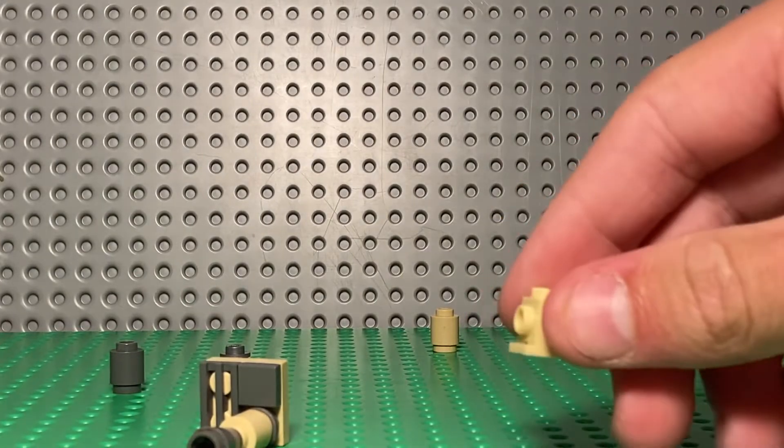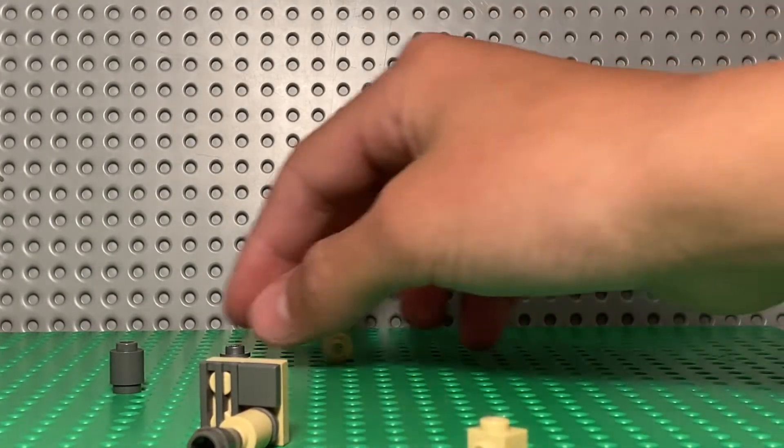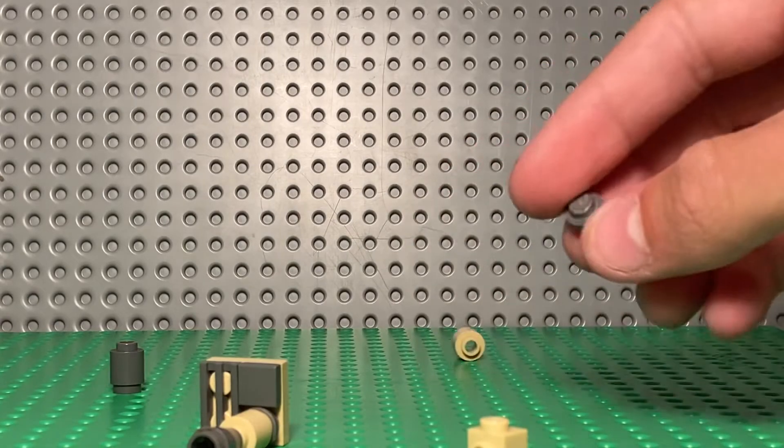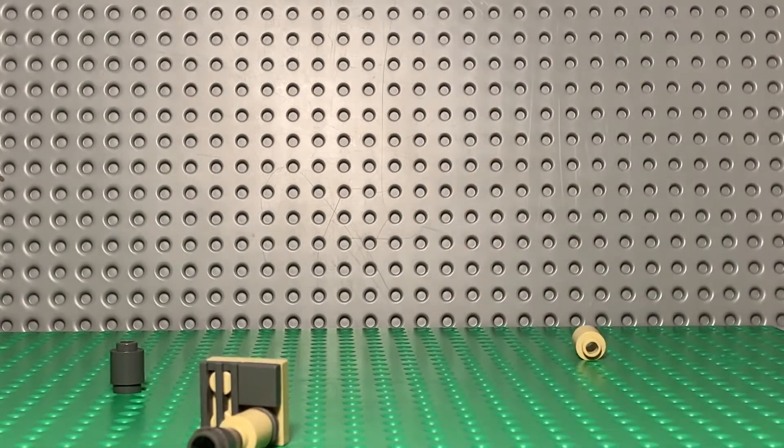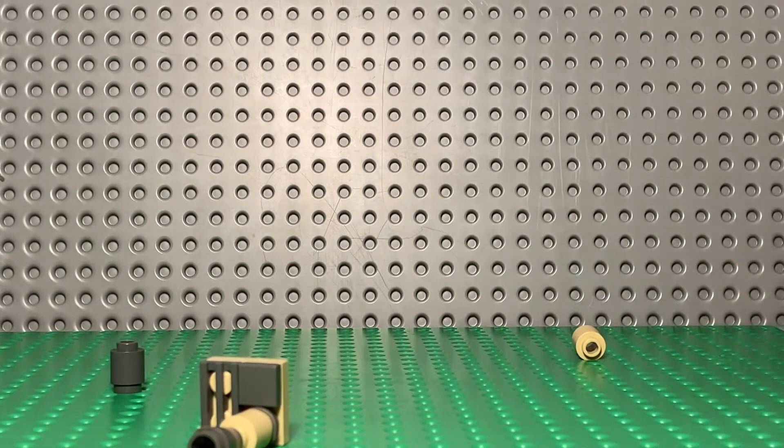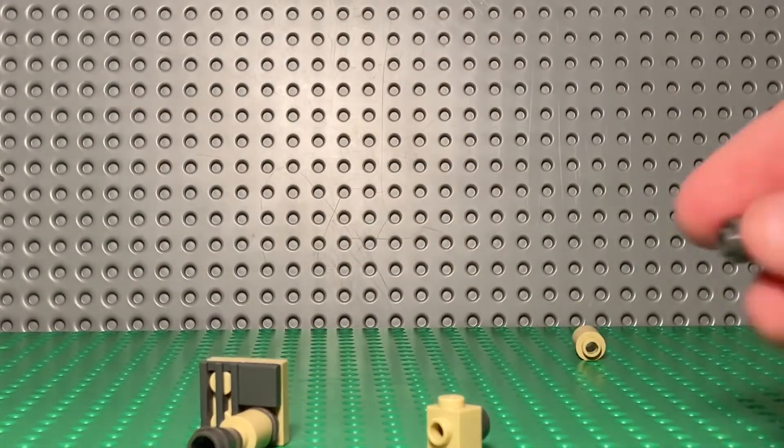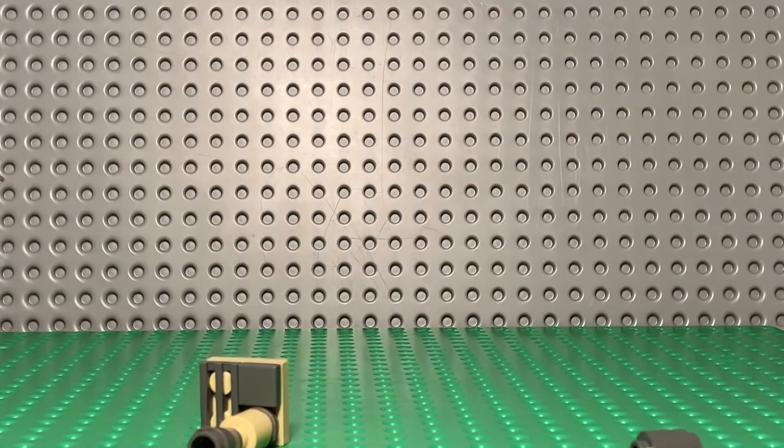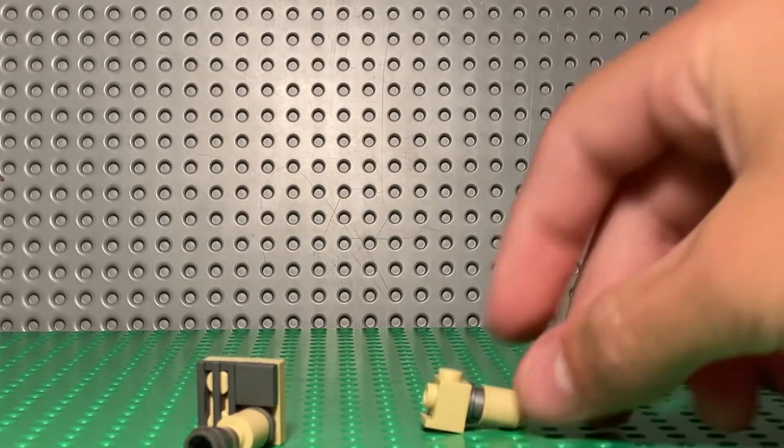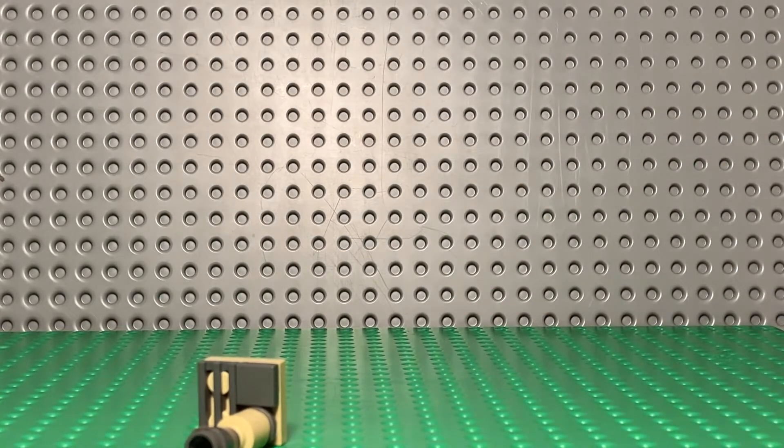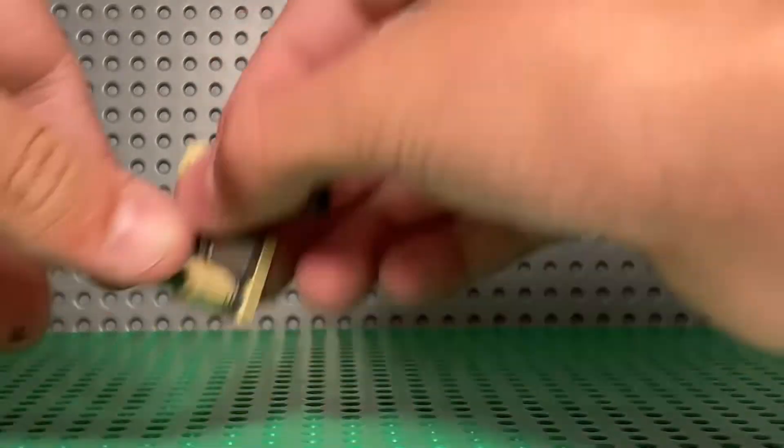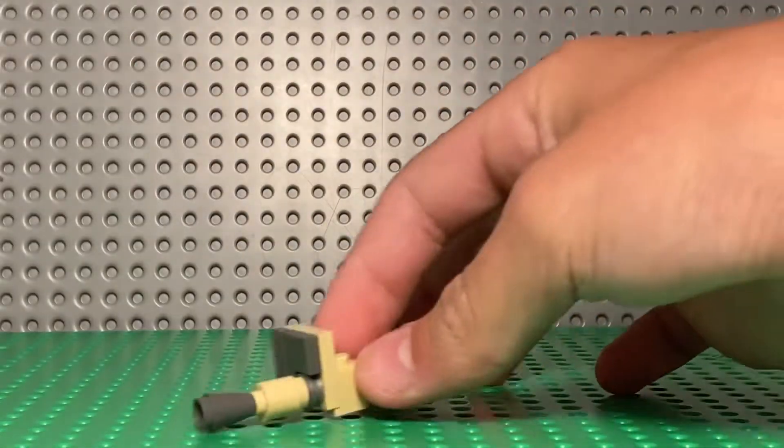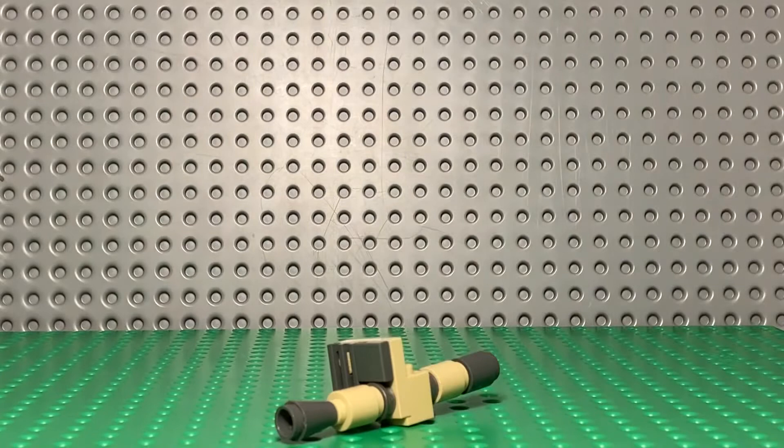Next up we're gonna get this piece right here. And then we are going to get the 1x1 cylindrical or the 1x1 silver stud. And then this piece, the second one that we've been using. And put the gray piece right behind it. And then just put that all together. There you go.